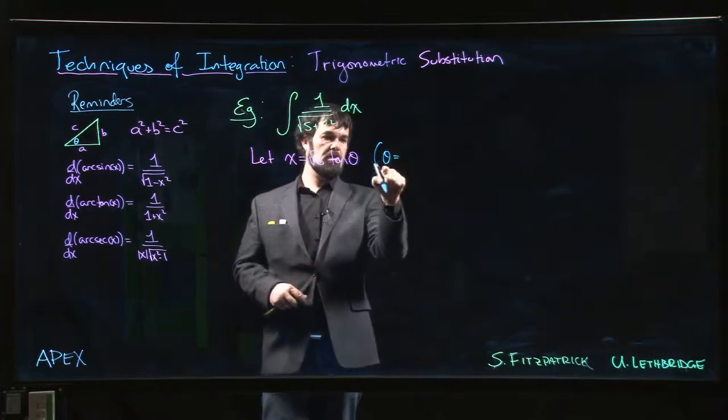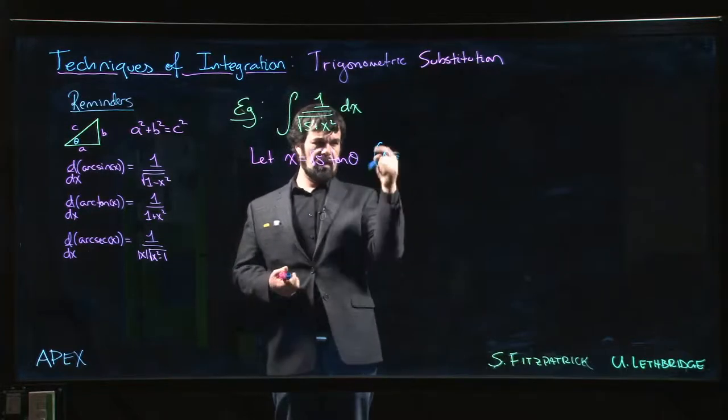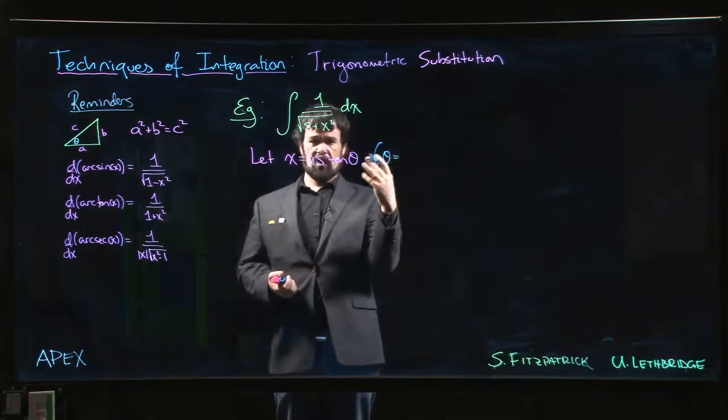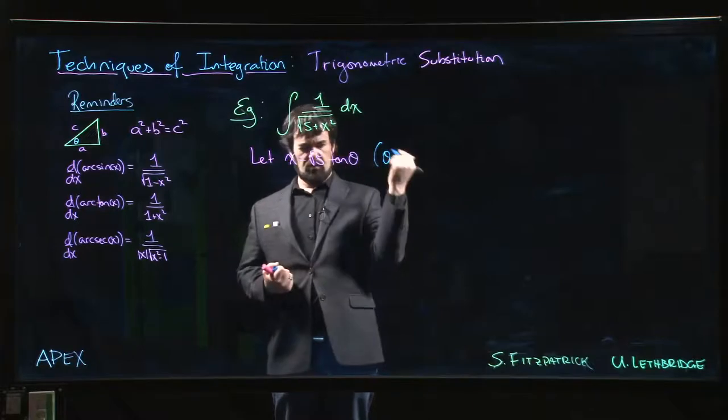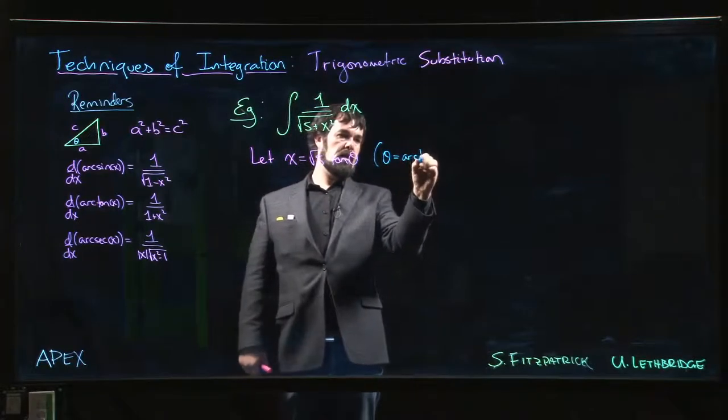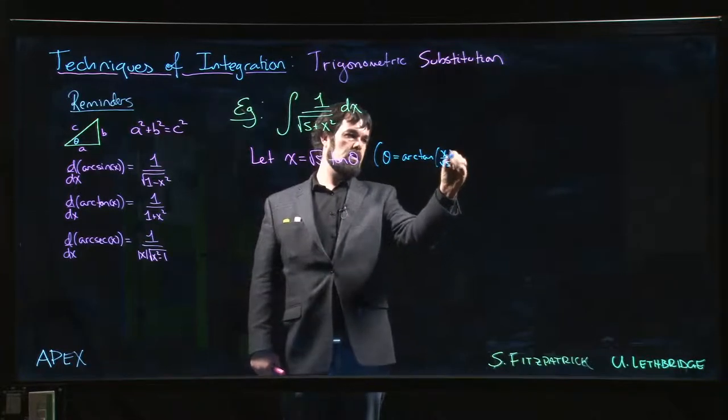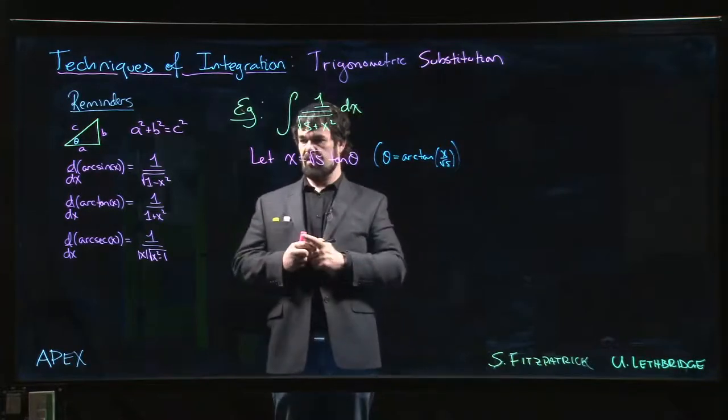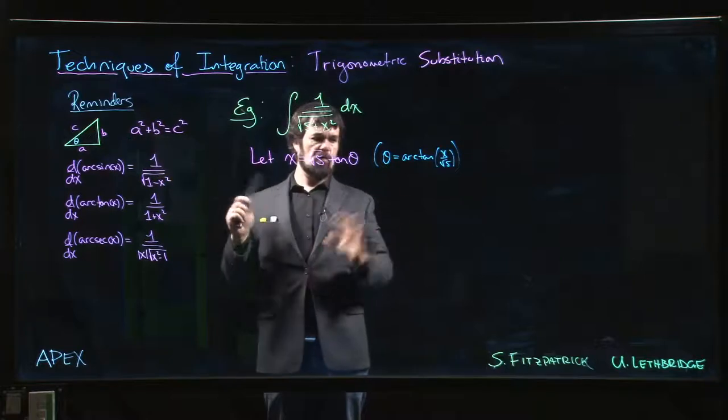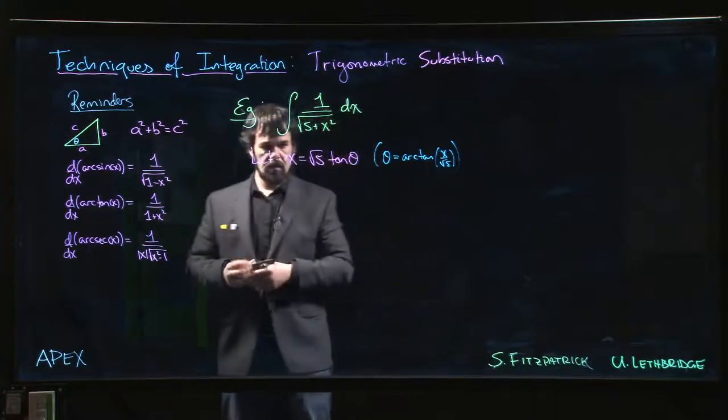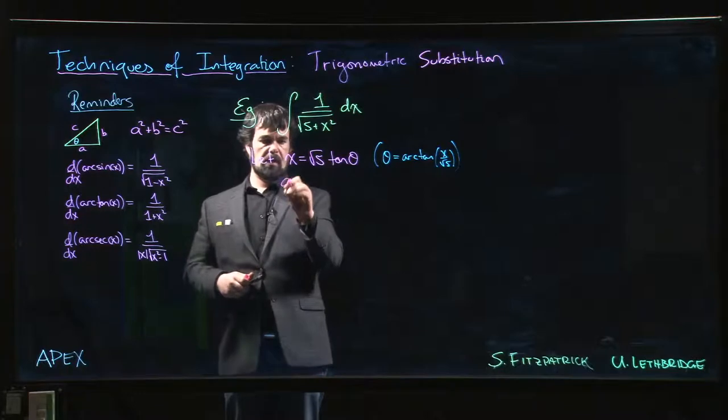...is we're actually making a u-substitution, right? Theta is the new variable. We're calling it theta instead of u because we do trig. So what we really mean here is theta is arctan of x over root 5. Okay? If it helps you draw the triangle, you don't really need it, but a lot of people like it.